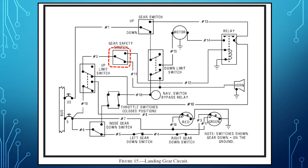The gear safety switch, also known as a squat switch, prevents the gear from being raised while the aircraft is sitting on the ground. It also provides a conductive path for current to flow to the relay, energizing it and allowing the relay contacts to close. The up limit switch allows current to flow to the up indicator light when the gear are up, and at the same time opens the circuit to the relay, turning the motor off.